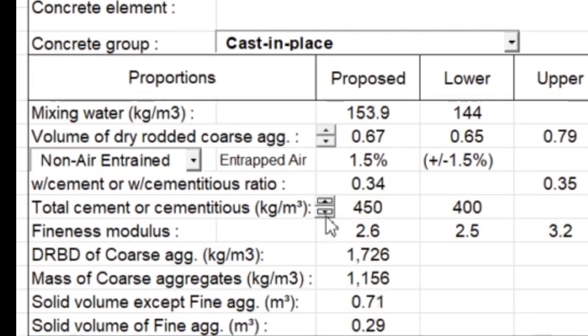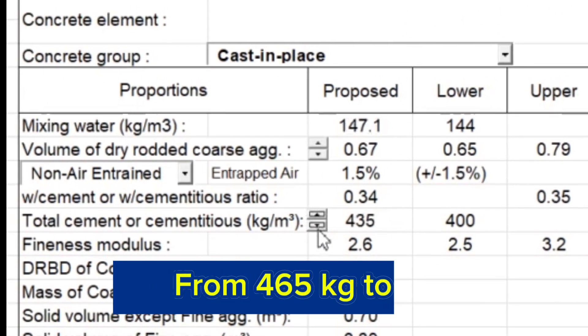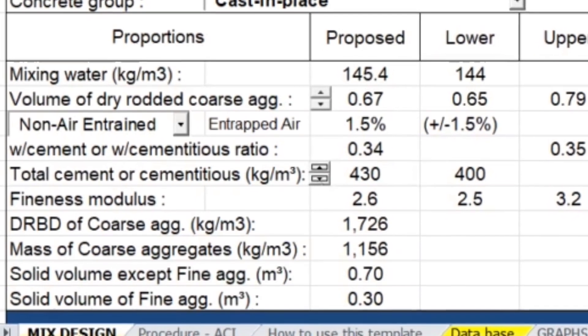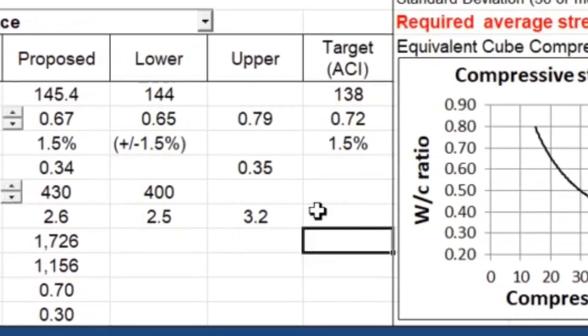That means I can actually reduce the cement content from 465 to 430 considering the use of the same water content. That's significant savings.